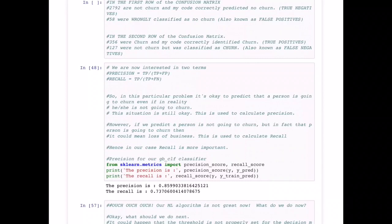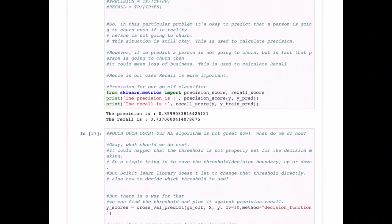How do we calculate this precision and recall for this Gradient Boost classifier? It is also available in the sklearn.metrics library, and we can import the precision_score and the recall_score. We calculate that the precision is around 86 percent, but the recall is about 74 percent, which is not a good number. Earlier we had 96 percent accuracy in the classifier, but when we are very specific about the recall, we see that it's only doing 74 percent.